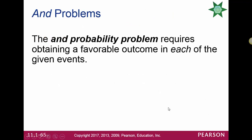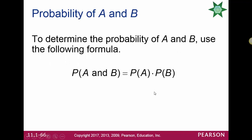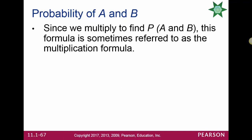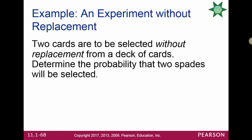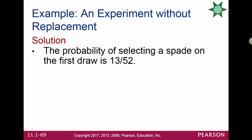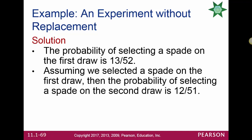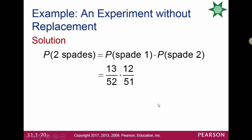AND probability problems require a favorable event in each of the given events, using a multiplication formula. When using it, we assume event A has occurred when calculating the probability of B. Two cards are drawn without replacement from a deck. The probability of getting two spades: first pick is 13/52 spades; without replacement there are 51 cards left, 12 spades remaining, so second pick is 12/51. Multiplying and simplifying gives 1 out of 17.